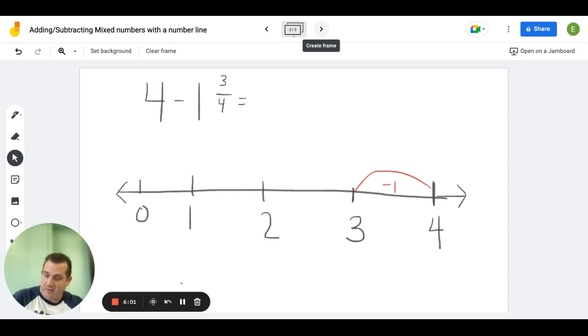But now I'm not done because I still have to subtract 3/4 from where I'm at. I'm at 3 and subtract 3/4. If I make one more jump, that's a whole. I don't want to subtract a whole. So what I'm going to do is I'm going to break up this whole into 4 equal pieces.